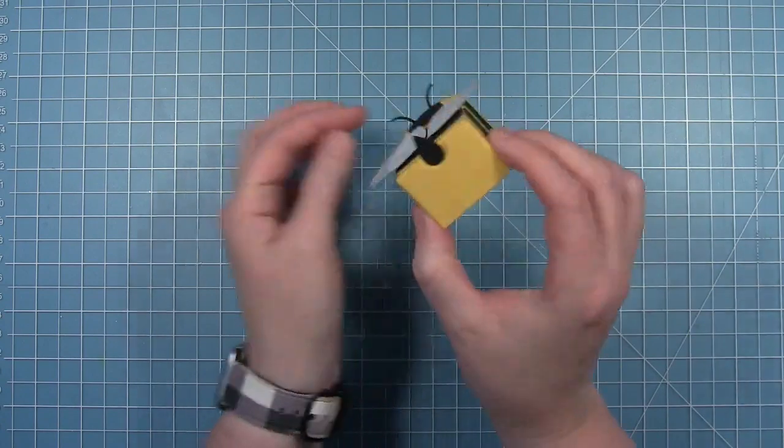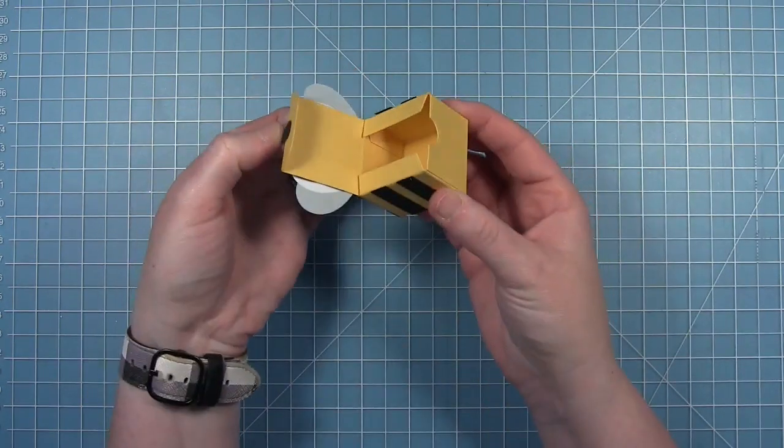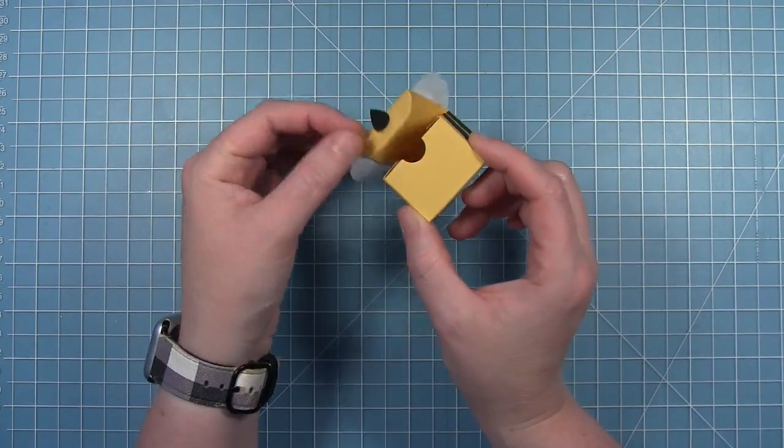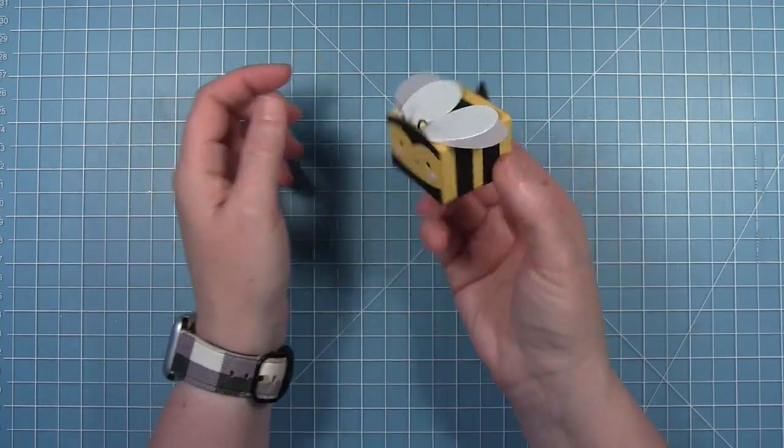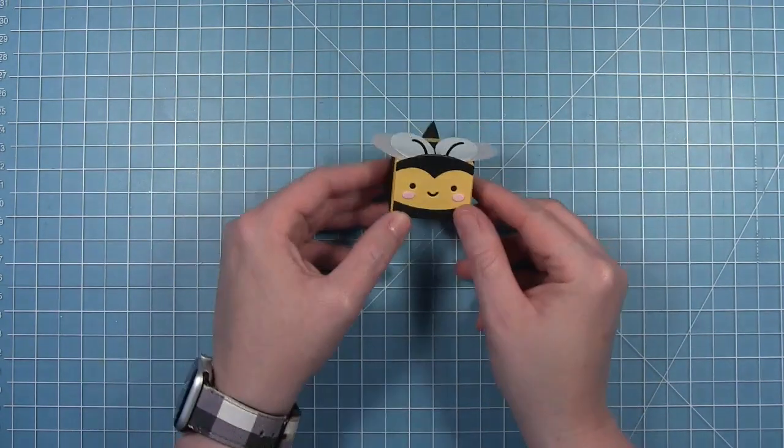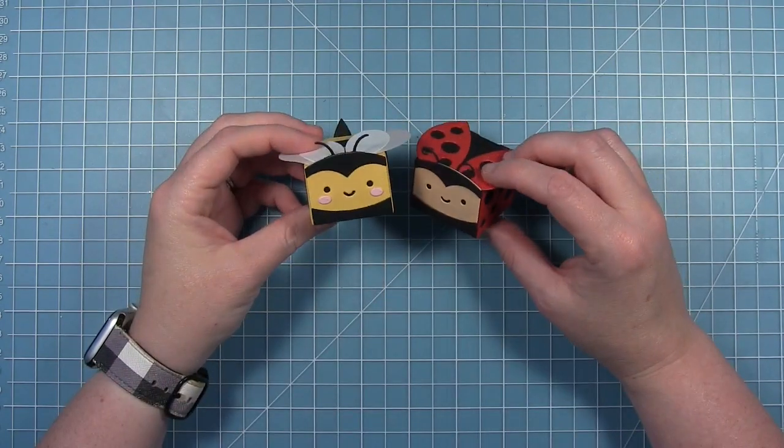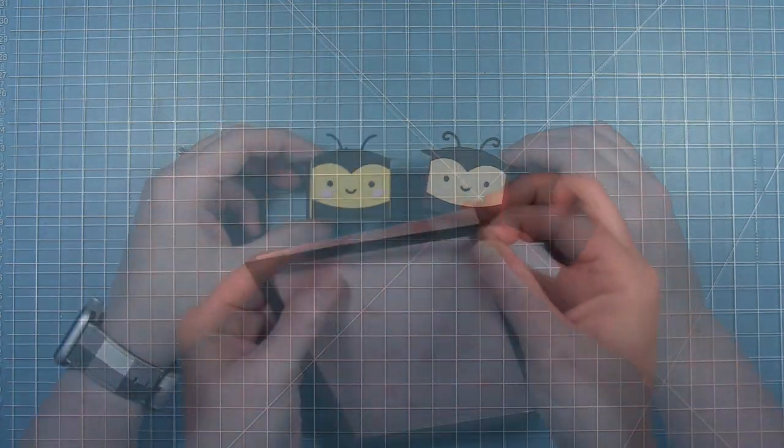Here is our cute little bee box. I just think he is so adorable. He goes perfectly with the ladybug box that we already have. I just think these two are so cute together.